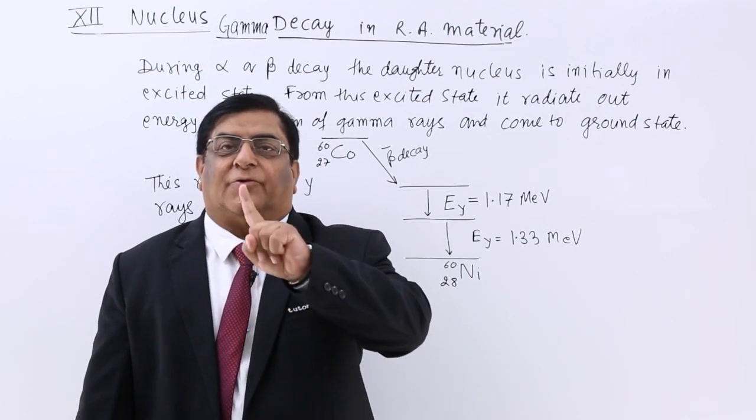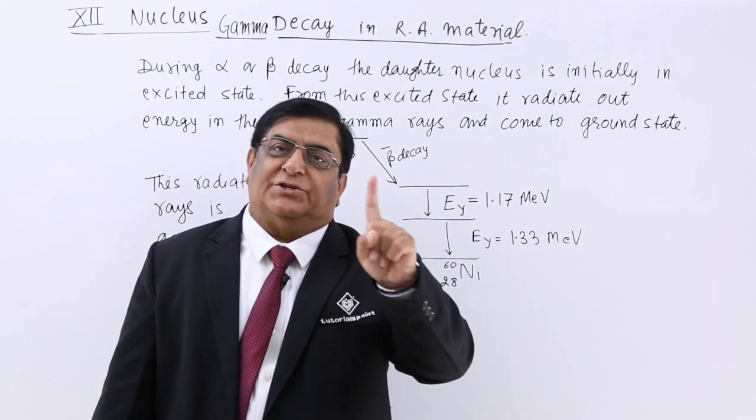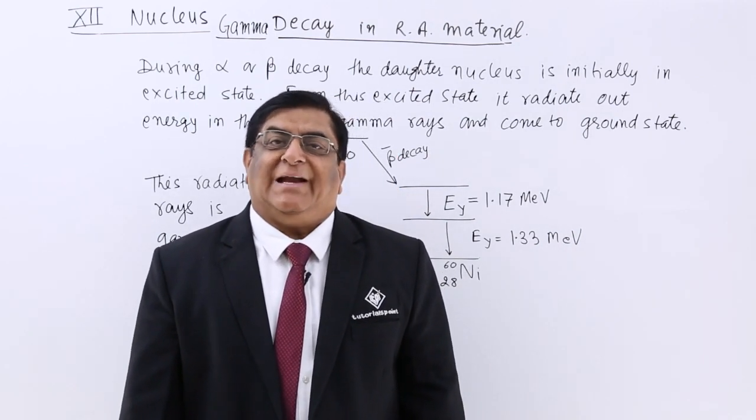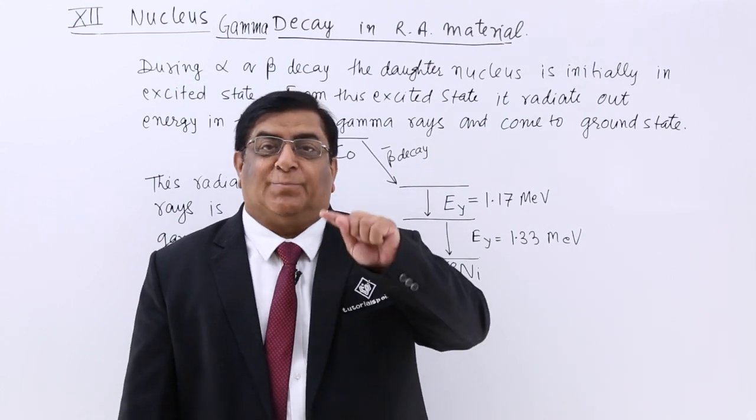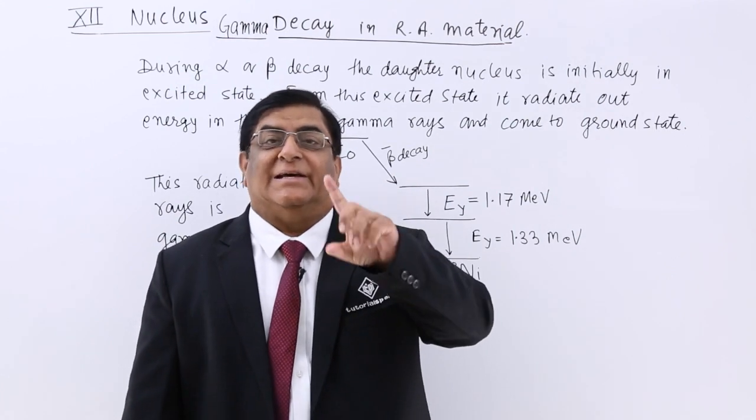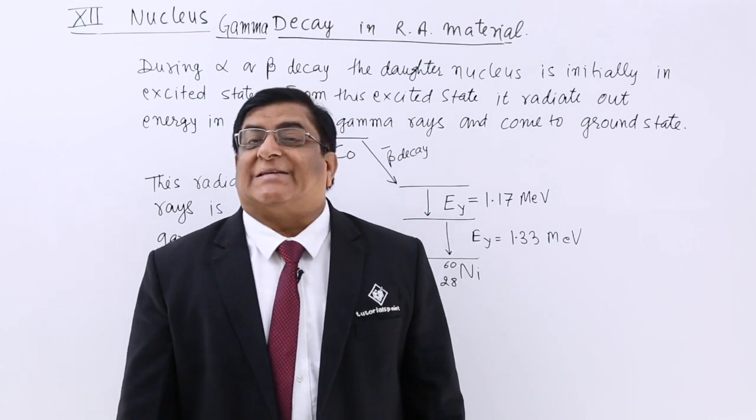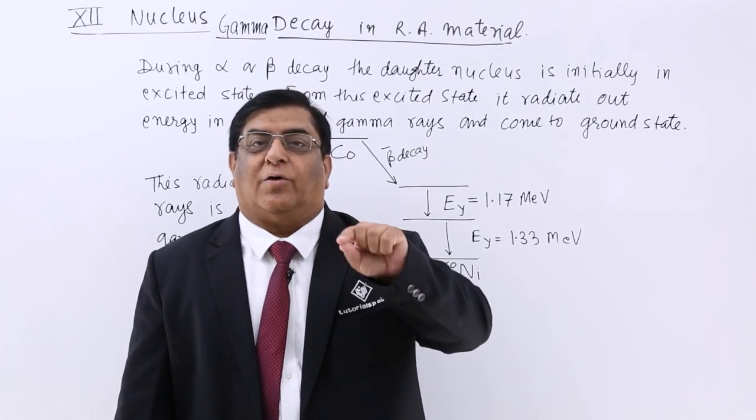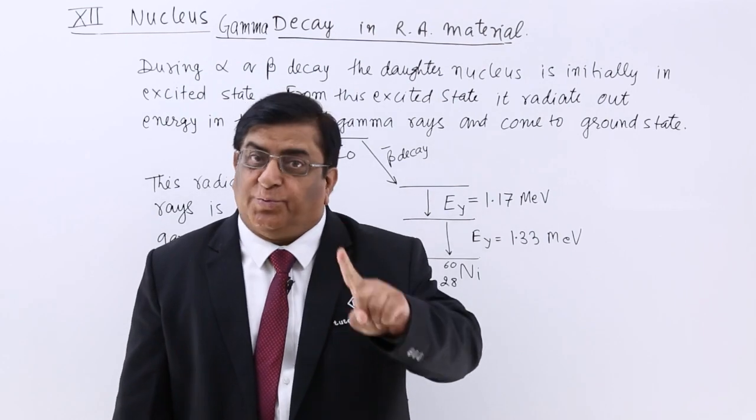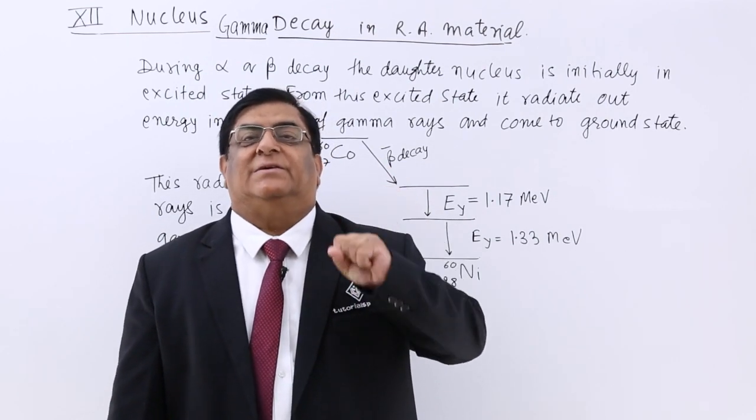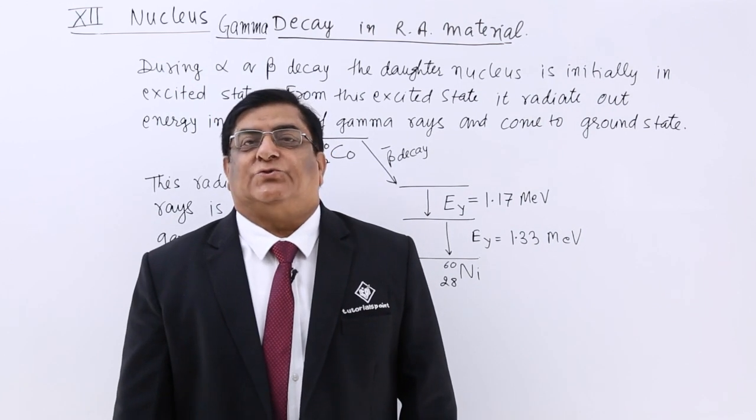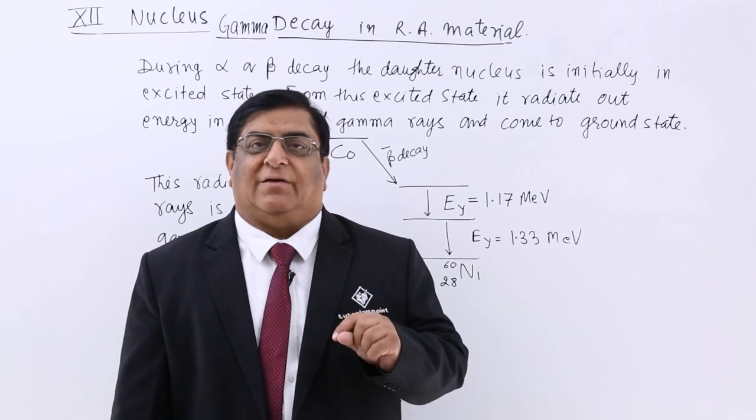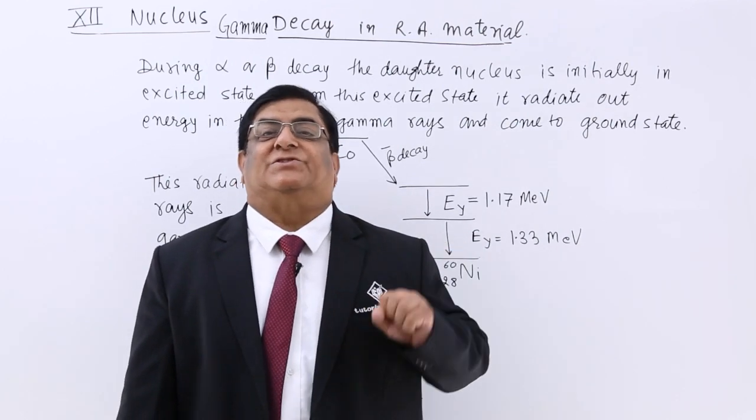First, when from mother nucleus there is a conversion to daughter nucleus, that is one thing. But that daughter nucleus at that particular moment initially is in excited state. Excited state means it has more than the normal energy which is associated, which should be associated with that daughter nucleus. So because of that additional energy it is having, it is known as in excited state.